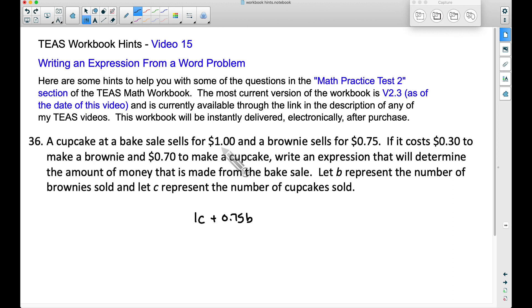So even though they sold a cupcake for a dollar, it costs them 70 cents to make it, and we need to subtract that off because they had to spend that money to make a cupcake. And let's subtract off one more thing too. It costs 30 cents to make a brownie, so let's subtract off the 30 cents needed to make a brownie.